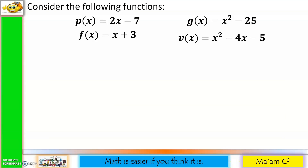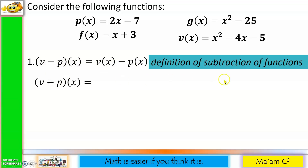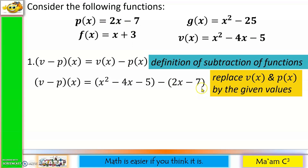Let us consider the following functions and solve number 1: (v − p)(x). Our first step is the definition of subtraction of functions, so this becomes v(x) − p(x). Next, replace v(x) and p(x) by the given values: v(x) is x² − 4x − 5, minus p(x) which is (2x − 7). Make sure you enclose that in parentheses.